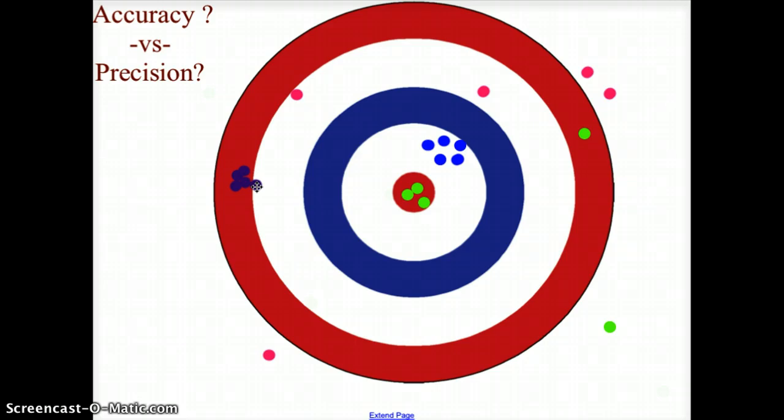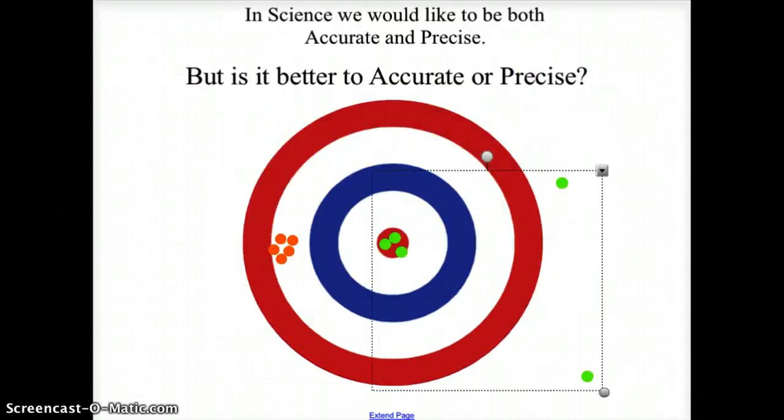And then the royal blue one in the white circle in the center, that person is a little bit more accurate and a little bit more precise. Now, when we deal with chemistry, we have to decide, is it better to be accurate or precise?